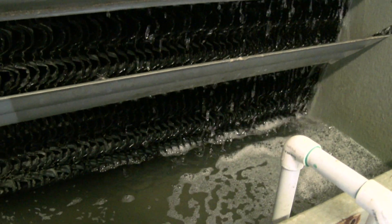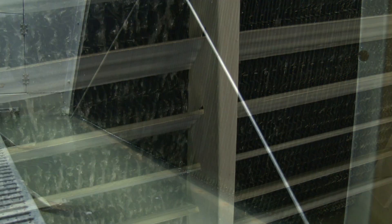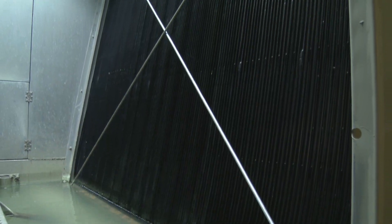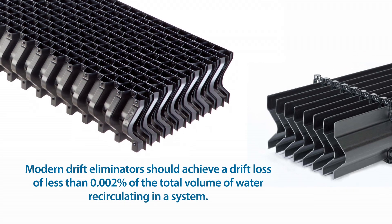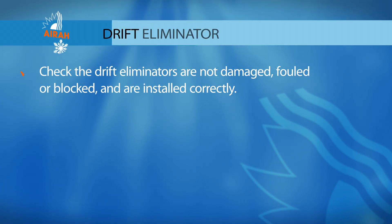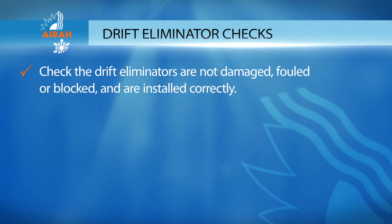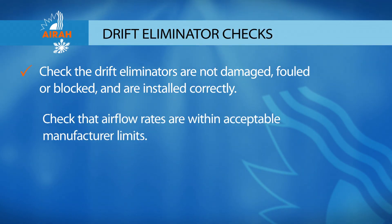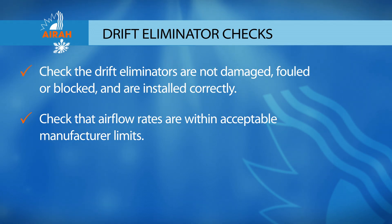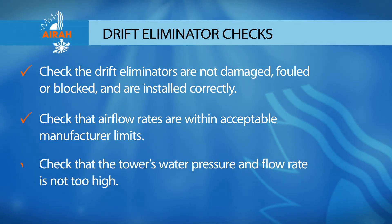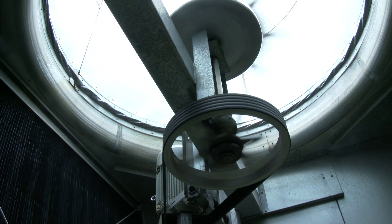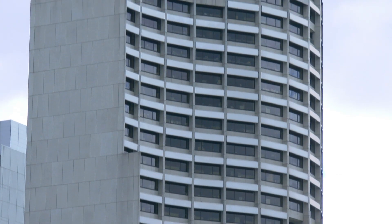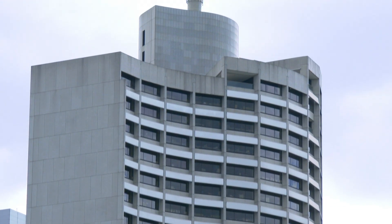Drift is largely controlled by the tower's design and operation, and in particular by the design of the drift eliminator. Modern drift eliminators should achieve a drift loss of less than 0.002% of the total volume of water recirculating in a system. Check the drift eliminators are not damaged, fouled, or blocked, and are installed correctly. Check that the airflow rates are within acceptable manufacturer limits, and that the tower's water pressure and flow rate is not too high. Controlling fan speeds and the prevention of ambient wind on the tower are ways of reducing potential drift losses further.